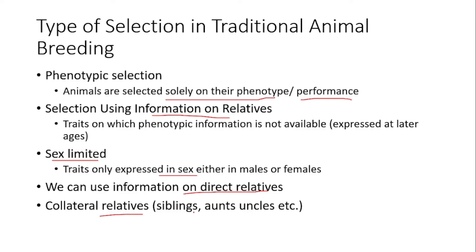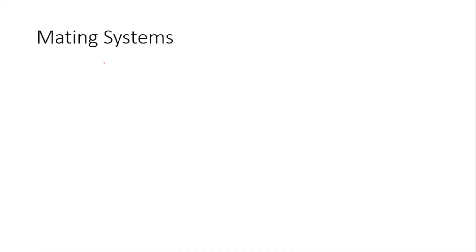These are the traditional types of selection used in animal breeding. I will conclude the selection topic here, as I will make another detailed lecture on the advanced techniques used nowadays. Now we will discuss different types of mating systems, which is the second tool used by animal breeders to improve animal populations. A mating system can be defined as a set of rules for mating, and the most commonly used mating systems are inbreeding, outbreeding, and crossbreeding.